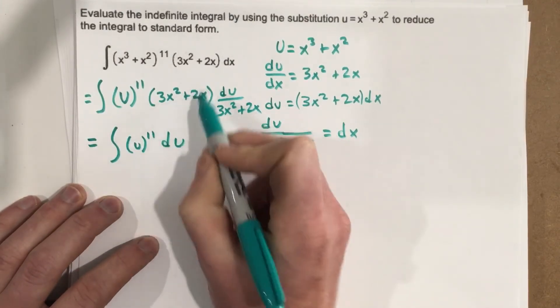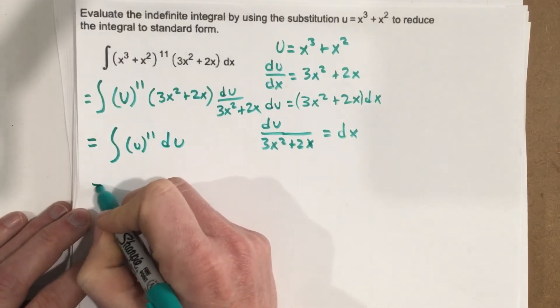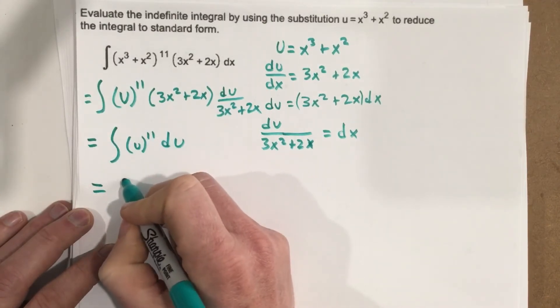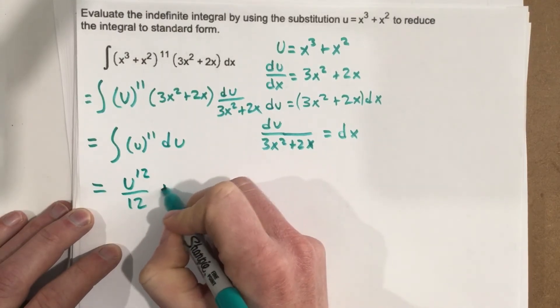It's pretty convenient. It crosses out. We're left here. Now we can actually do the integration here. So add 1 to the power divide. And we get u to the 12th over 12 plus c.